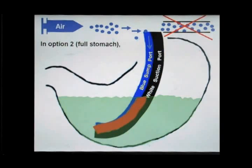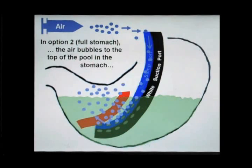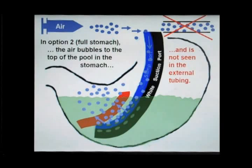In option two, this cannot happen. Why? Because when air is injected in the sumping port of an NG tube which is within a full stomach, the air simply bubbles to the top of the pool in the stomach and is therefore of course not seen in the external tubing.